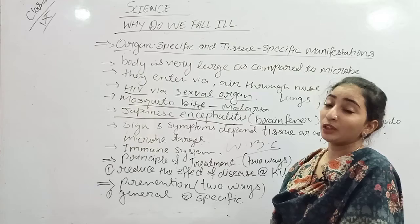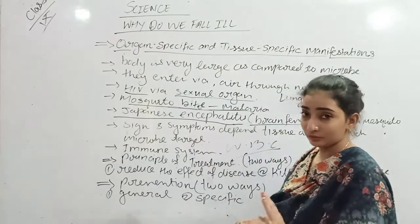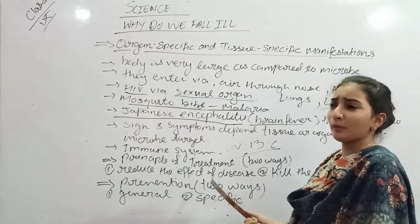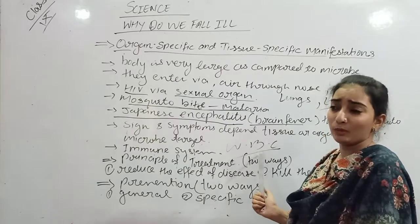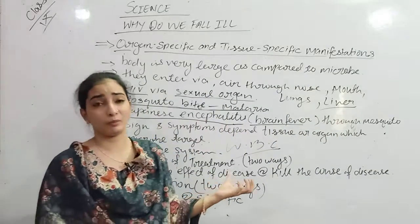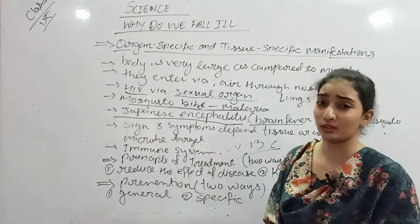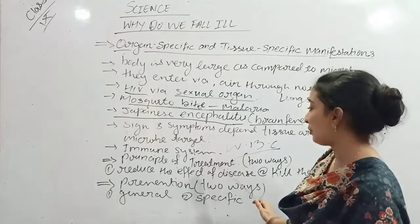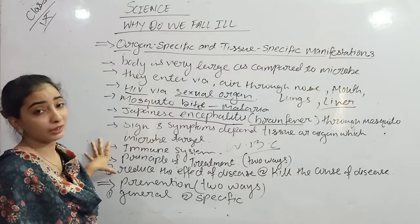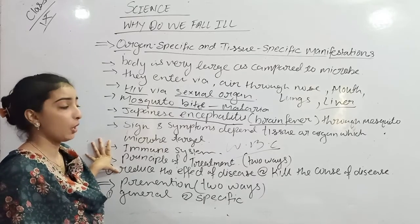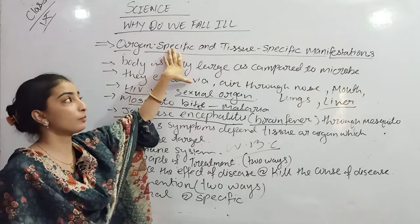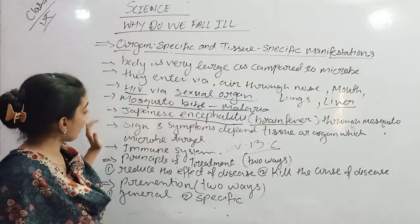The immune system of our body is very important. New microbes that enter our body face our immune system, which fights them. If someone's immune system is strong they will fight off the disease, but if the immune system is weak they will feel different effects from the microbes. This is the concept of organ specific and tissue specific manifestation.